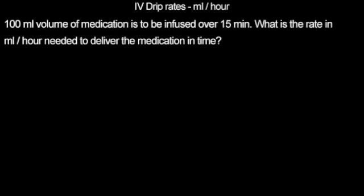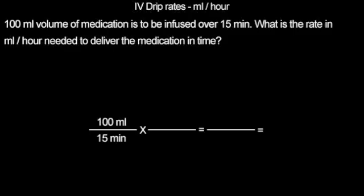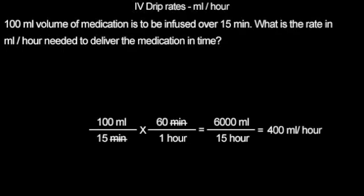Here we look at IV drip rates, calculated as milliliters per hour. 100 milliliters volume of medication is to be infused over 15 minutes. What is the rate in milliliters per hour needed to deliver the medication in time? Our equation starts with our dose over our expected infusion time: 100 milliliters over 15 minutes. To calculate this in hours, we multiply by 60 minutes in one hour. We cancel like terms and multiply across. We get 6,000 milliliters over 15 hours. Divide, and we are left with 400 milliliters per hour.